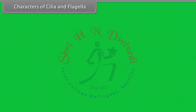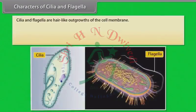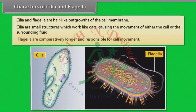Characters of cilia and flagella. Cilia and flagella are hair-like outgrowths of the cell membrane. Cilia are small structures which work like oars, causing the movement of either the cell or the surrounding fluid. Flagella are comparatively longer and responsible for cell movement.